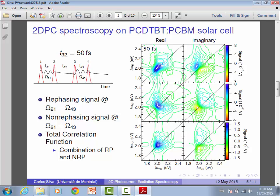So we scan T2-1, scan T4-3. It's equivalent to doing multidimensional nuclear magnetic resonance for people who are familiar with these techniques. We're going to measure a time response as a function of these two time delays that we can Fourier transform to the frequency domain to generate a two-dimensional photocurrent excitation spectrum. That's what we have here.